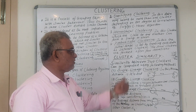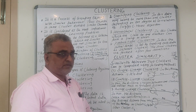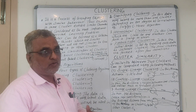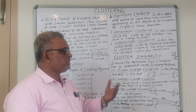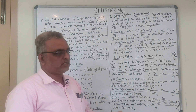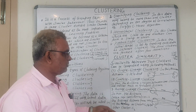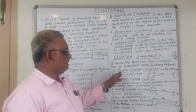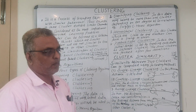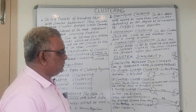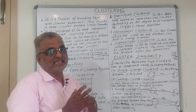The next topic is cluster similarity. The similarity between two clusters can be computed using a few methods. Some of the important methods are listed here. Number one is single linkage clustering, in which the minimum distance is selected.